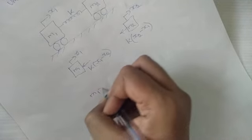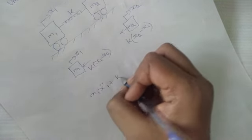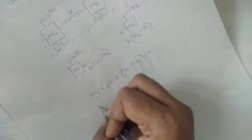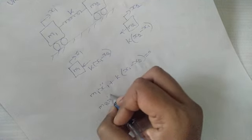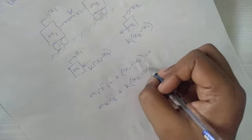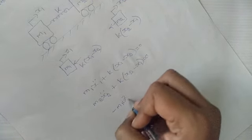This is the free body diagram for the first mass and for the second mass. What you get is: m1·x1̈ + k·(x1 − x2) = 0, and m2·x2̈ + k·(x2 − x1) = 0. If you substitute x = A·sin(ωt) and take the second derivative, you get −m1·ω²·A1.